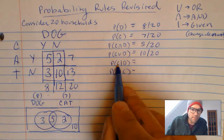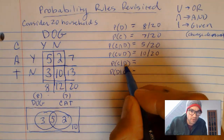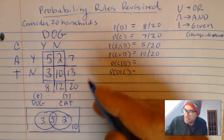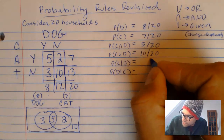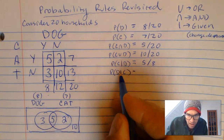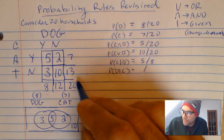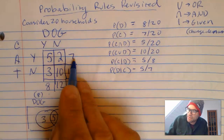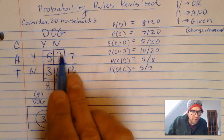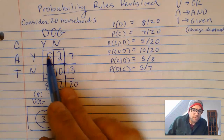What's the probability of having a cat, given the house has a dog? We change the denominator to just the houses with dogs — these 8. Of those 8, how many have cats? 5. So it's 5 out of 8. And given a house has a cat — there are 7 houses with cats — 5 out of those 7 have dogs. That's 5 out of 7.